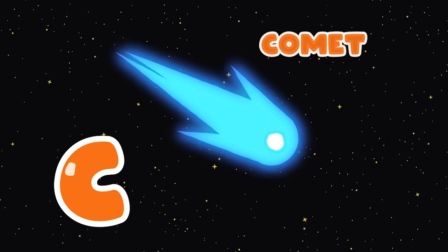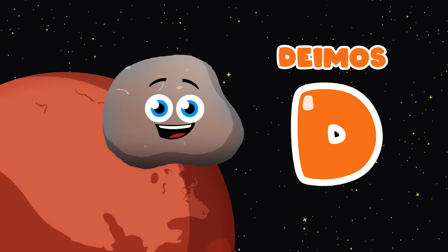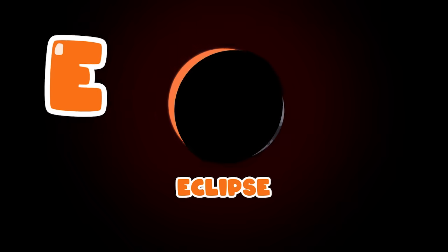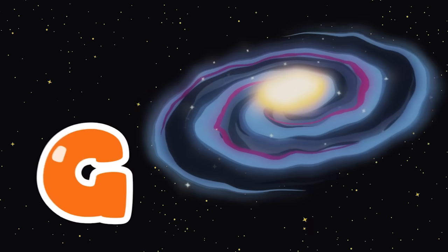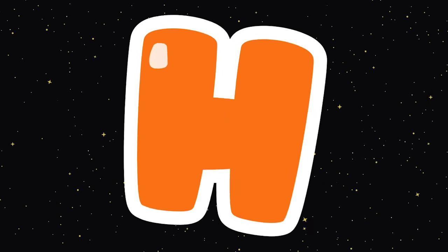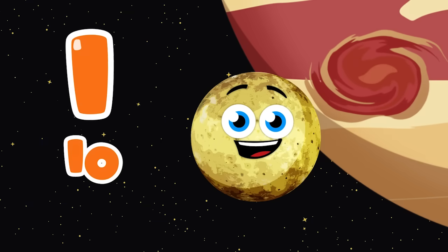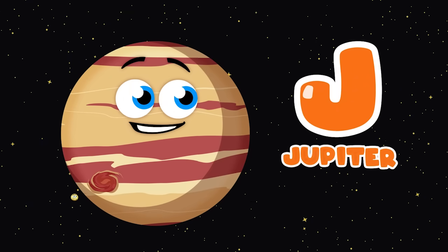C is for Comet, D in Deimos for shore, E is for Eclipse, F is for Vener, G is for Galaxy. H is for Hubble, I is for Io, J is for Jupiter.